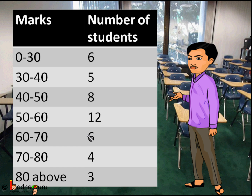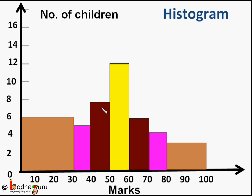We learnt in our previous video how to create a histogram from the data. So here is the histogram he created to show to the headmaster. If we look at the height of the bar, we can say the 50 to 60 class interval has the highest number of students — 12 students. And the 80 to 100 class has the lowest number of students. We know a histogram represents frequency distribution in classes, and the area of rectangles is proportional to the frequencies.